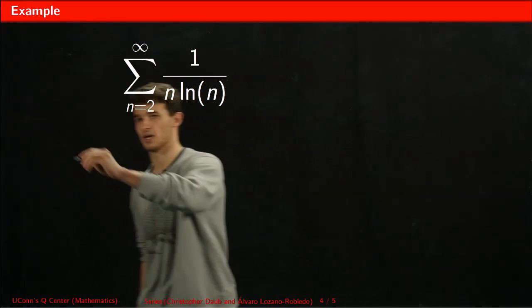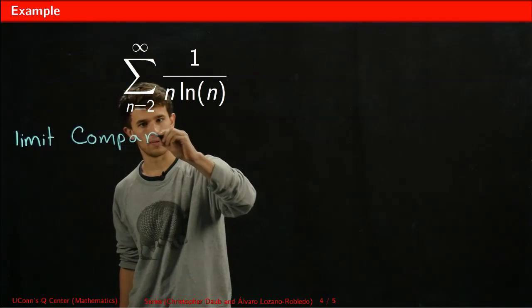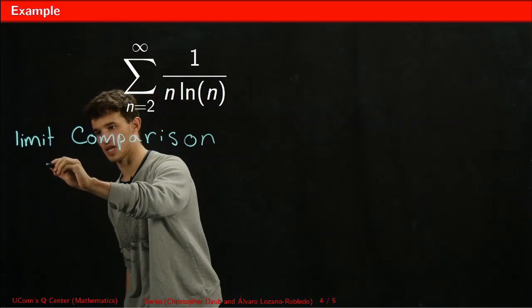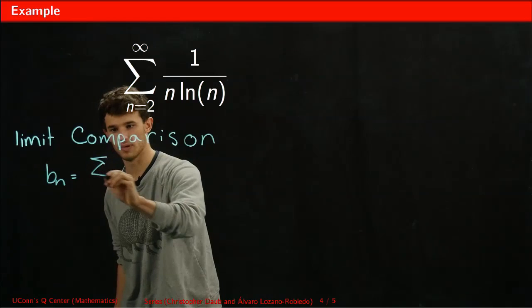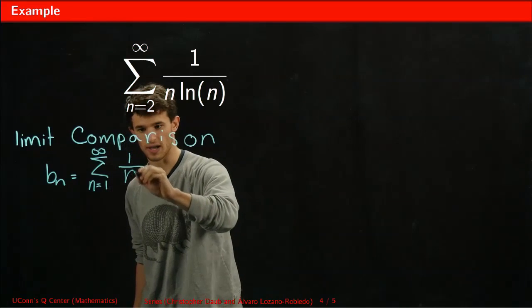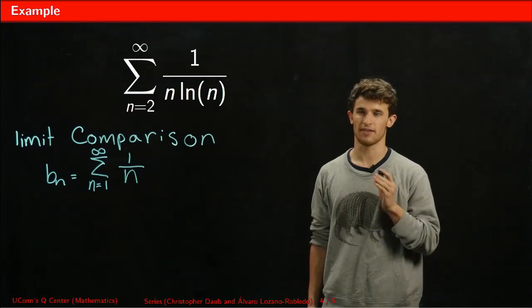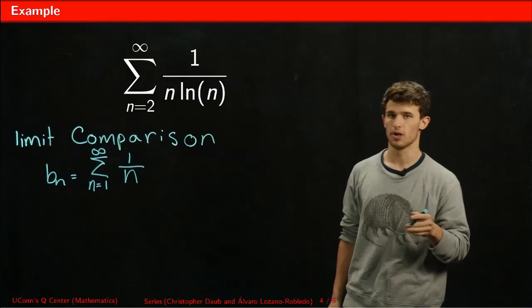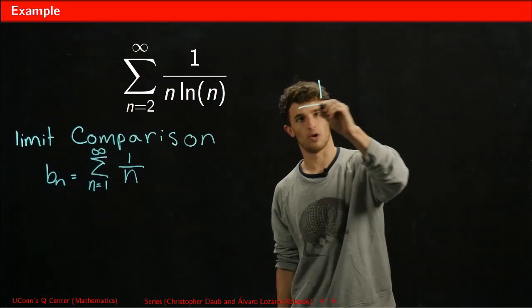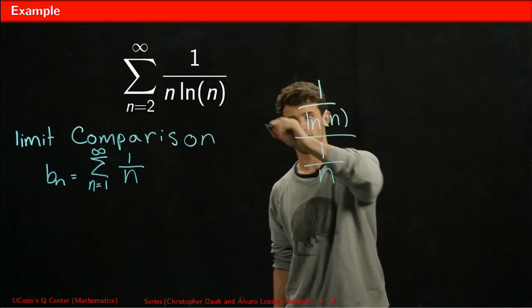One of those tests would be the limit comparison test. When we do the limit comparison test, we have to compare our series 1 over n ln(n) to another series, let's say bn, which will equal the sum from n equals 1 to infinity of 1 over n. The reason why I chose this series is because we know that 1 over n diverges, and I have a feeling that 1 over n ln(n) may also diverge. What we do is take our original series 1 over n ln(n) and divide it by 1 over n, taking the limit.